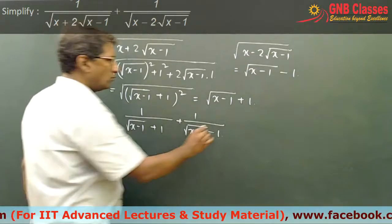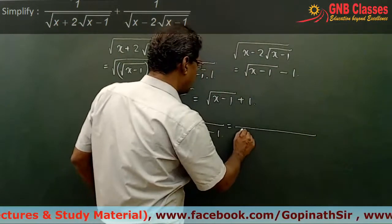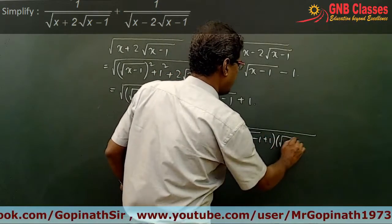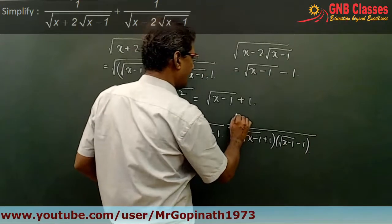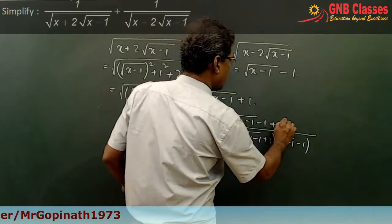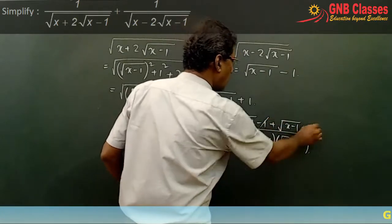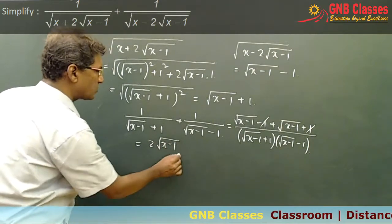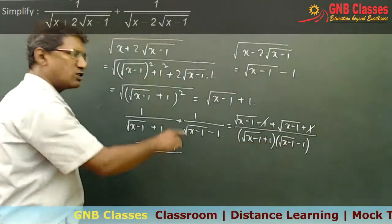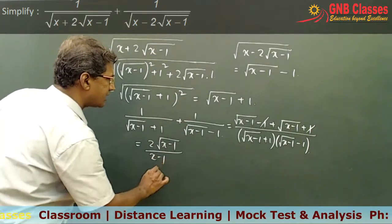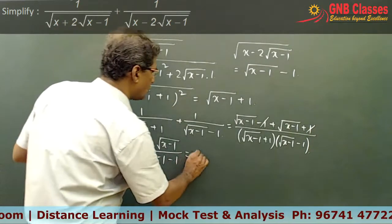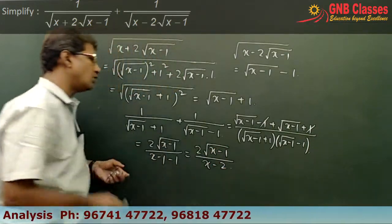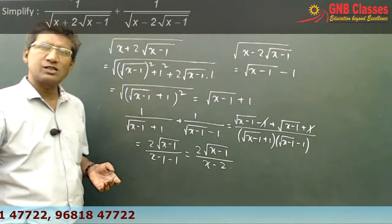Now if I take the LCM, the 1s cancel off and we are left with 2 under root x minus 1 in the numerator. The denominator is a plus b into a minus b, which is a squared minus b squared, giving x minus 1 minus 1. So our final simplified answer is 2 under root x minus 1 divided by x minus 2.